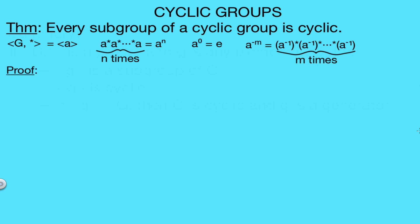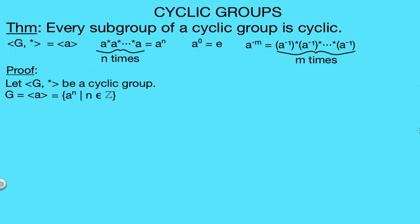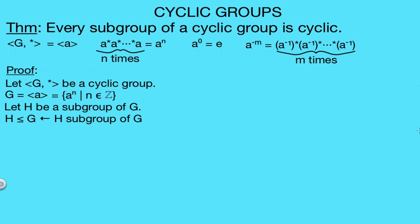So we're going to say that G is our cyclic group, and since it's cyclic we know that there must be a generator, so we're going to call that generator A. That means we can write the entire group as the set containing integer powers of A. Now we're trying to prove that every subgroup of this group is cyclic, so let's say that H is a subgroup of G. You might see the notation H with a less-than-or-equal-to sign before G, which just means H is a subgroup of G.